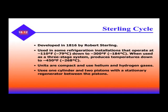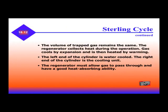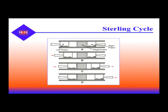We also need to mention the Stirling cycle, developed in 1816 by Robert Stirling. It's used in some refrigeration installations operating at negative 110 down to negative 300 degrees. When used as a three-stage system, it produces temperatures down to negative 450 degrees. The units are compact and use helium and hydrogen gases. It uses one cylinder and two pistons with a stationary regenerator between the pistons. The volume of the trapped gas remains the same. The regenerator collects heat during operation, gas cools by expansion and is then heated by warming. The left end of the cylinder is water-cooled, and the right end is the cooled unit. This is an example of the Stirling cycle, showing a left piston and a right piston.